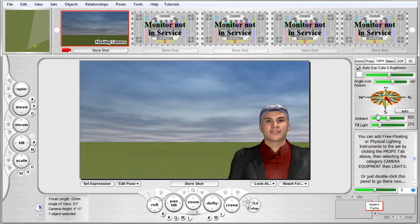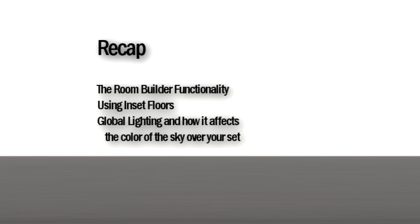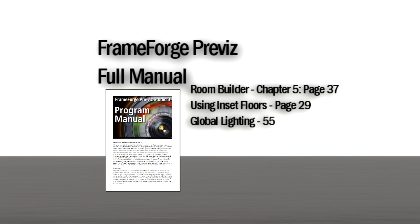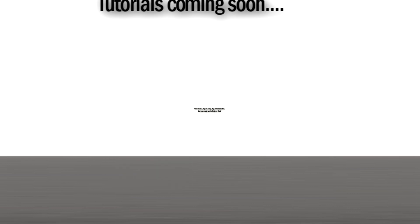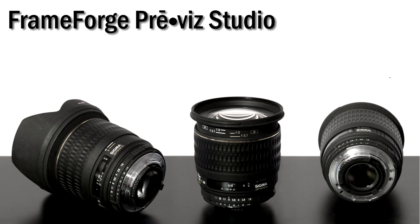So if you're simply trying to make the sky lighter or darker, you may want to change the sun rather than the sky. Okay, let's recap. I introduced you to using the room builder, and we talked about using inset flooring to add a single texture over the top of your global ground texture, and we talked about global lighting's effect on the look of the sky over your set. For more information on these topics, make sure you check out the full program manual — I've thrown up some page numbers to get you started right here. Also make sure to check out our upcoming tutorials, where I'll be showing you how to bring in the actors, props, and various set dressings that will make your set a scene and not just a collection of blank walls. Until then, see ya.